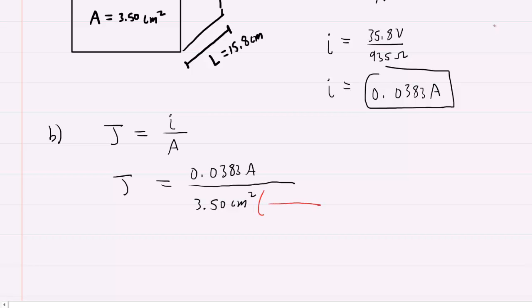We'll put in 3.5 centimeters squared, but then we recall that 1 centimeter is 10 to the minus 2 meters. Because we are trying to cancel centimeters squared, we're going to have to square our conversion factor. Make sure you punch that into your calculator correctly.